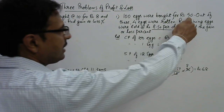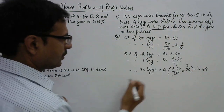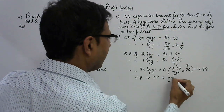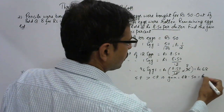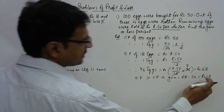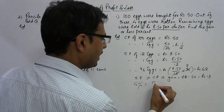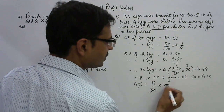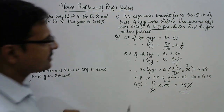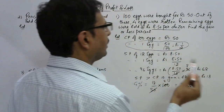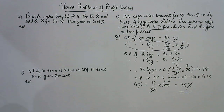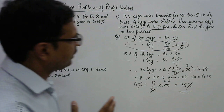Rupees 68 are obtained on selling and the cost was rupees 50. Selling price is greater than cost price, which implies we have a gain. The gain is 68 minus 50, which is rupees 18. Gain percent is gain upon CP into 100, which gives 36 percent gain — that is the answer to this question.